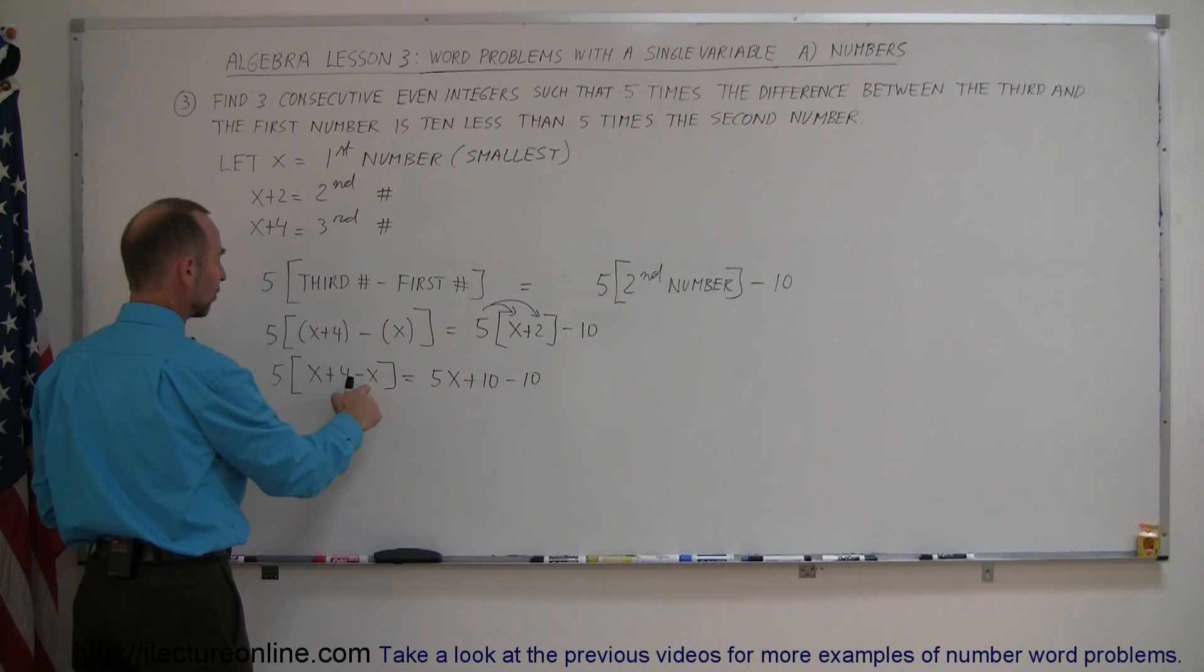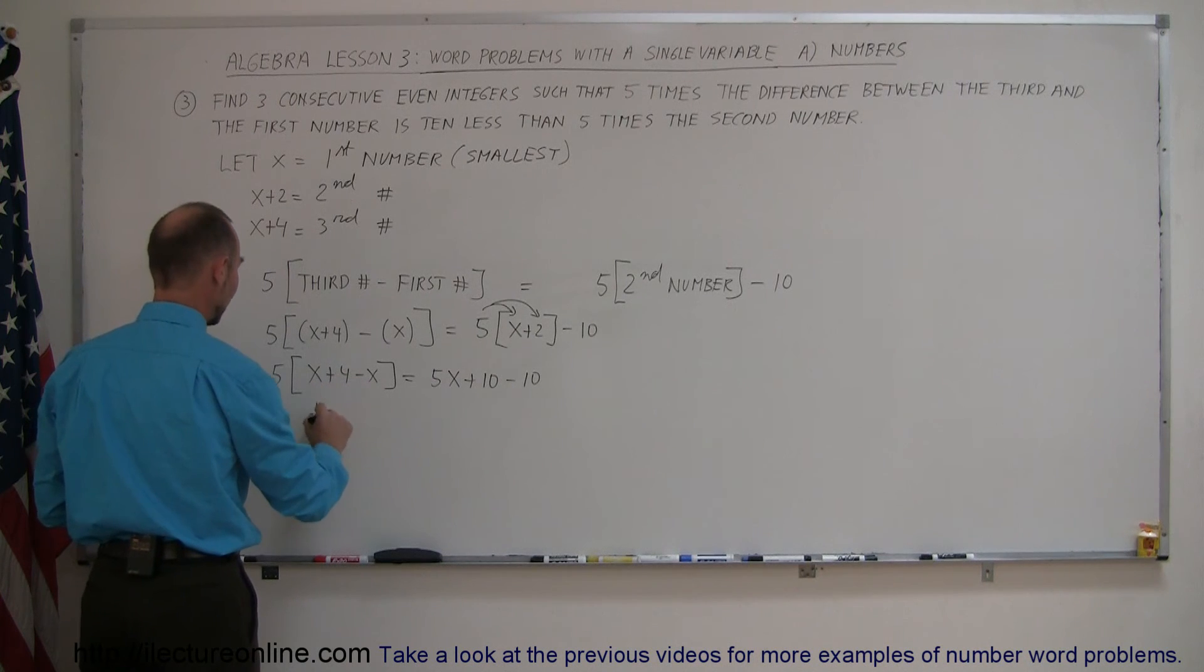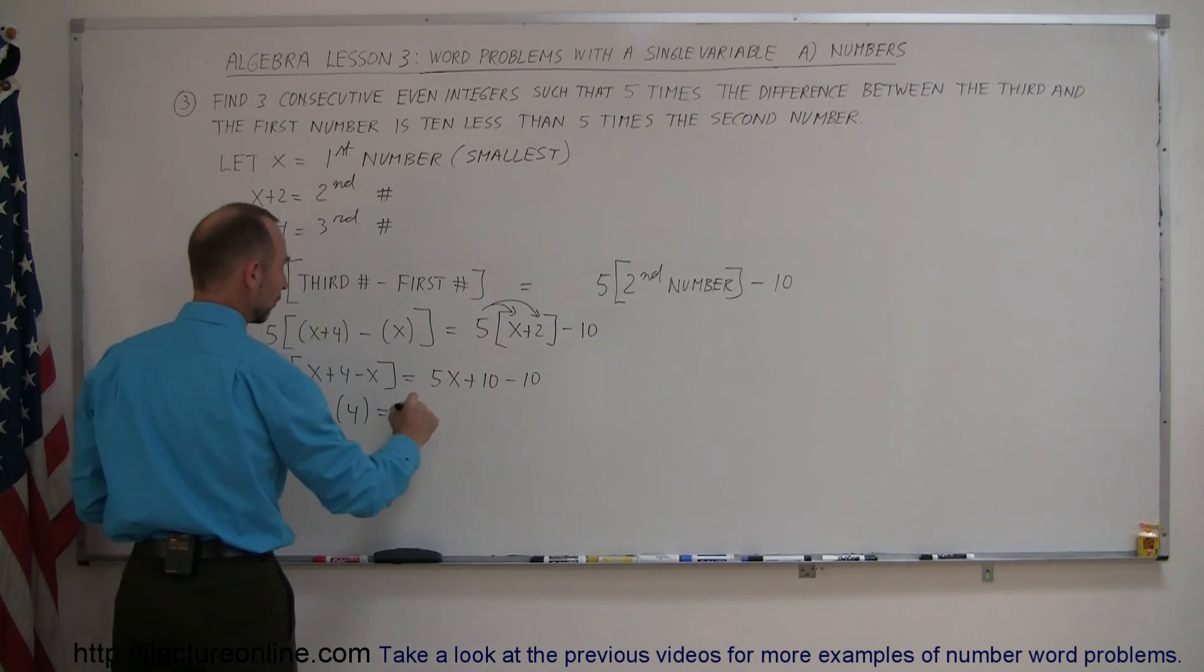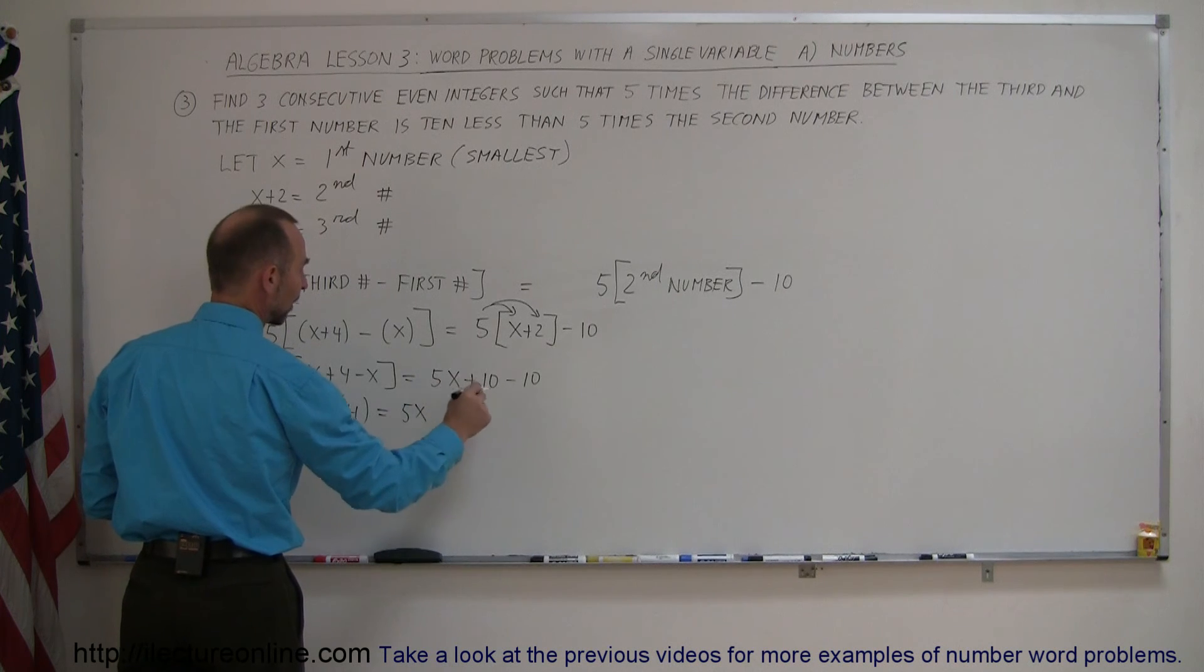Then x minus x is simply 0 plus 4. So we have 5 times 4 is equal to 5x plus 10 minus 10. And so we have 20 is equal to 5x.